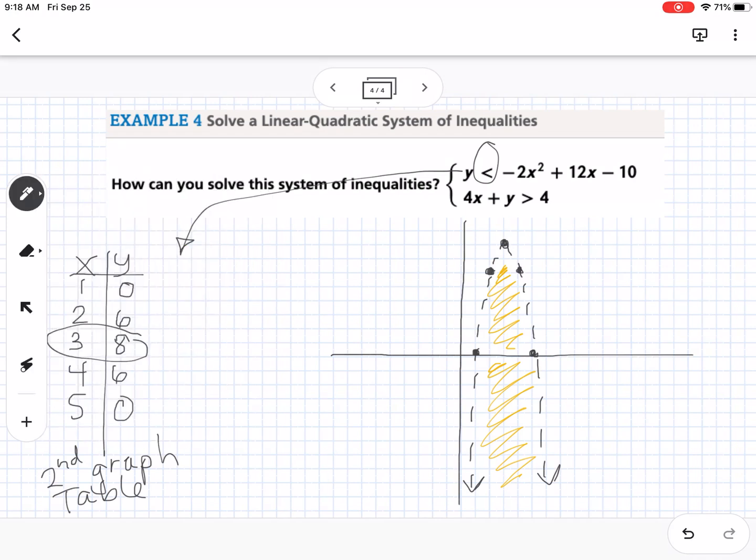Okay, so now I need to graph my line. So I'm going to use that cover-up method to graph that. So if I cover up the y, I have 4x equals 4, which means my x-intercept is at 1, so right here. And then if I cover up the x, I have y equals 4, so my y-intercept is right here.